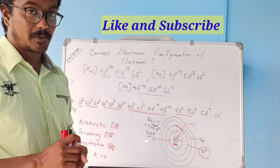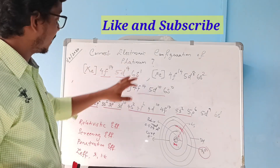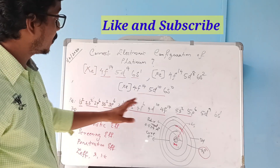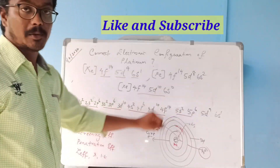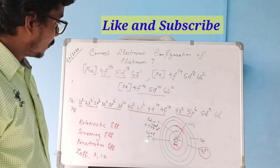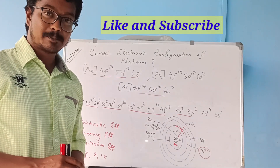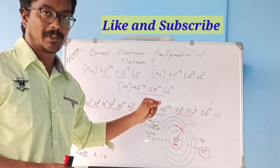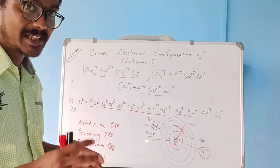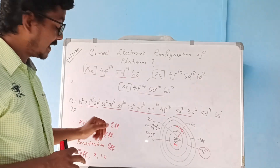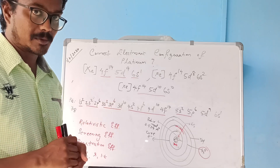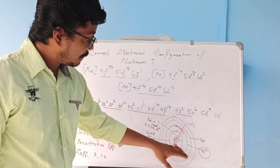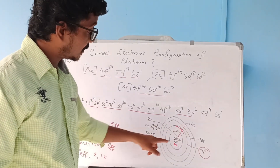To find the correct electronic configuration, we have to first write the full electronic configuration of platinum. The atomic number is 78 and xenon is the noble gas core. There are two key theories that will help us: the first is relativistic theory, and the second is the screening effect of the valence electron.